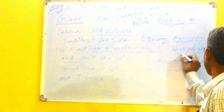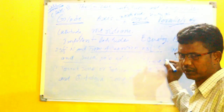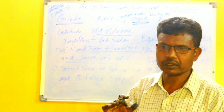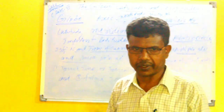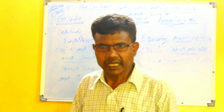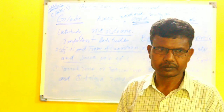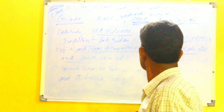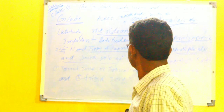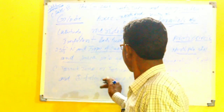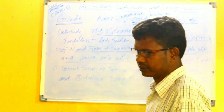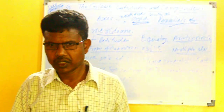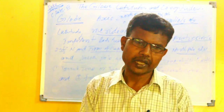The North Pole is at 90 degrees north and the South Pole is also at 90 degrees south. Now let us see the heat zones of the Earth. What does it mean?